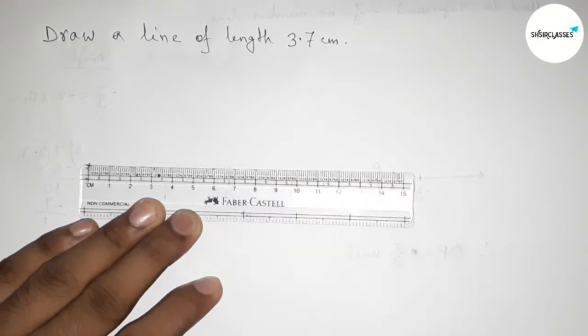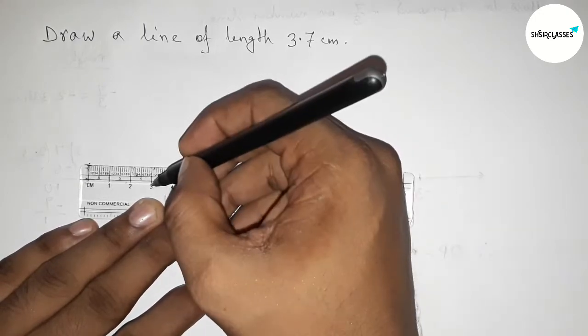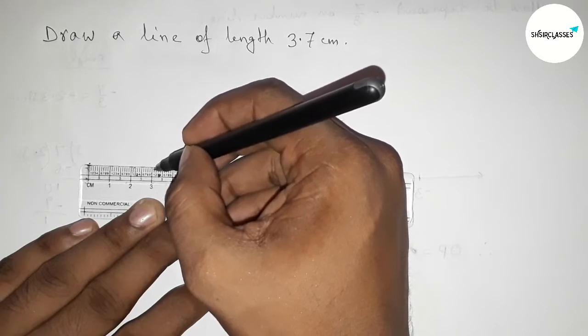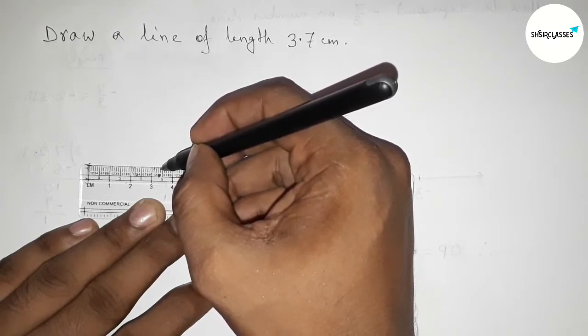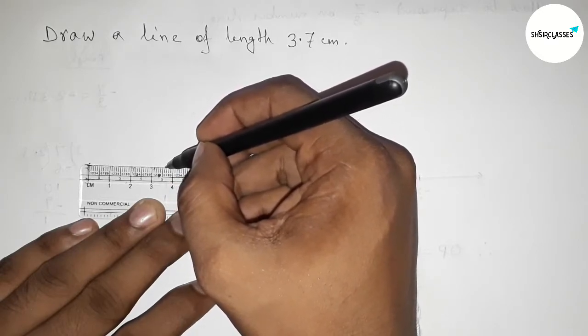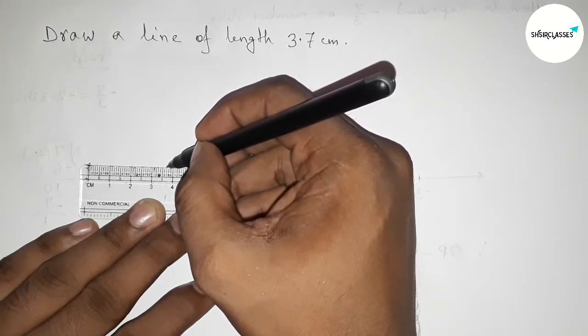And now counting 3.7, so this is 3, now 3.1, 2, 3, 4, 5, 6, 7. So this is 3.7 centimeter length.